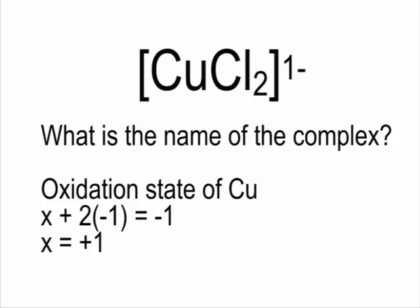So the next question is then, what is the name of this complex? The first thing to do is to find out what's the oxidation number of the copper, because copper can have various oxidation numbers, and therefore we need to put the oxidation number as part of the name.